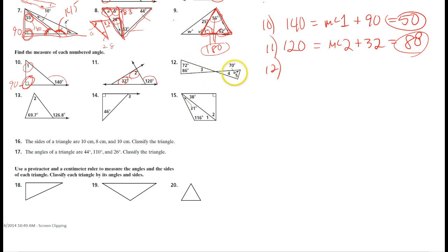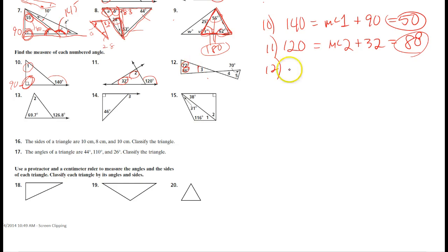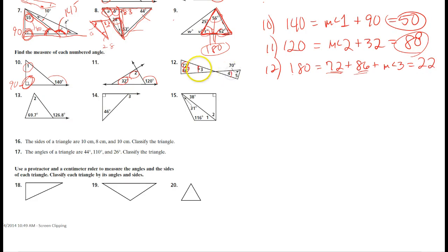Number twelve. Angles three and four are going to be congruent because they're vertical angles. Using the triangle sum theorem: one hundred and eighty equals seventy-two plus eighty-six plus the measure of angle three. Subtracting seventy-two and eighty-six from one hundred and eighty gives angle three equals twenty-two. Since angle three is vertical with angle four, the measure of angle four is also twenty-two.